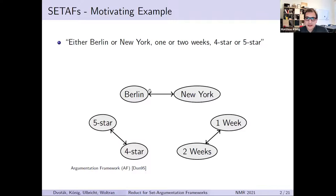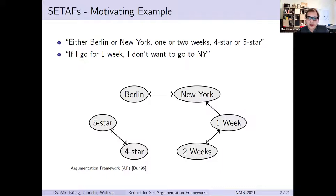In a standard Dung-style argumentation framework, you would probably model it something like this. The nodes of this directed graph correspond to the so-called arguments, and the directed edges are the so-called attacks. For example, the argument five-star hotel attacks the argument four-star hotel, and vice versa. If you have an additional constraint of the form 'if I go for one week, then I do not want to go to New York,' you would just add one more edge from the argument one week to the argument New York.